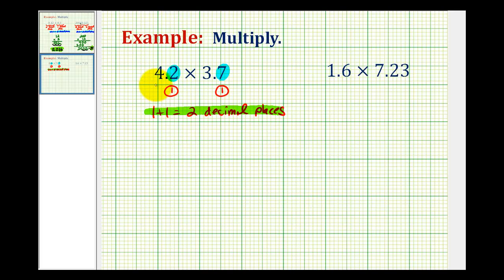And once we know this, we can go ahead and multiply, ignoring the decimal places, and then place the decimal point in the correct position in the product.